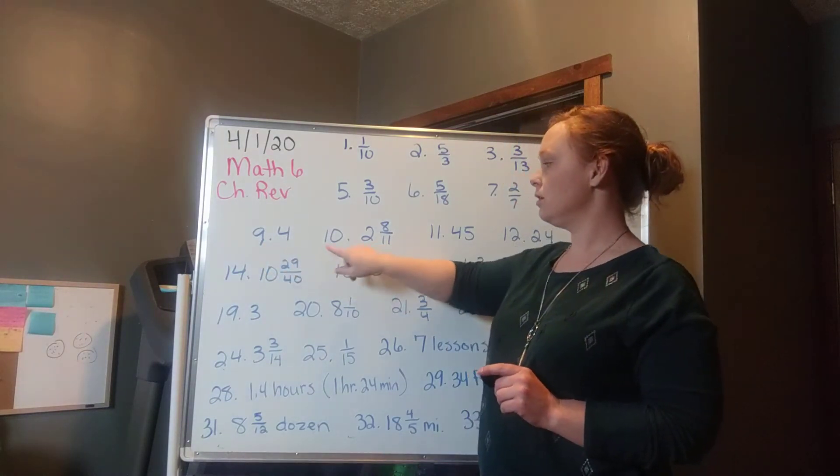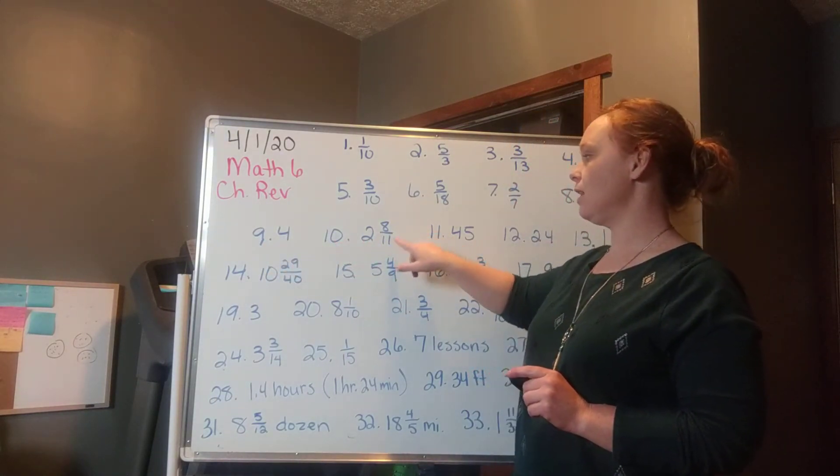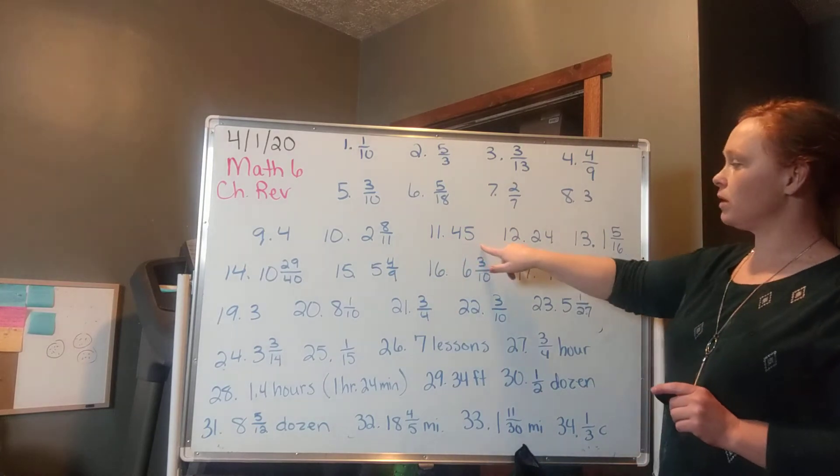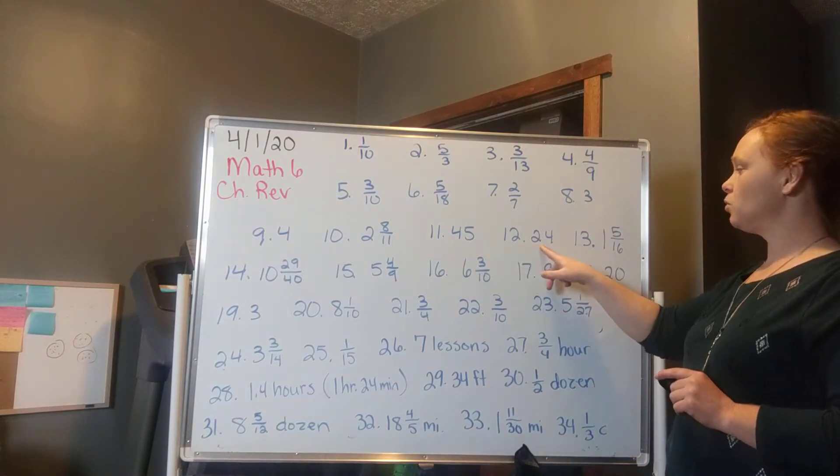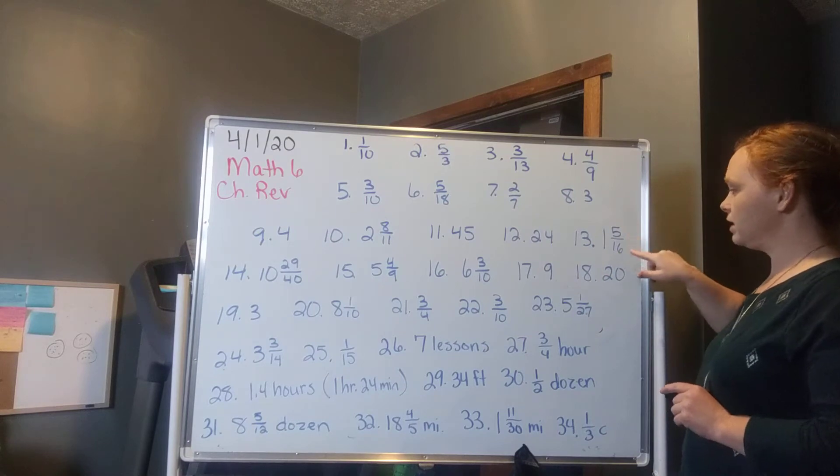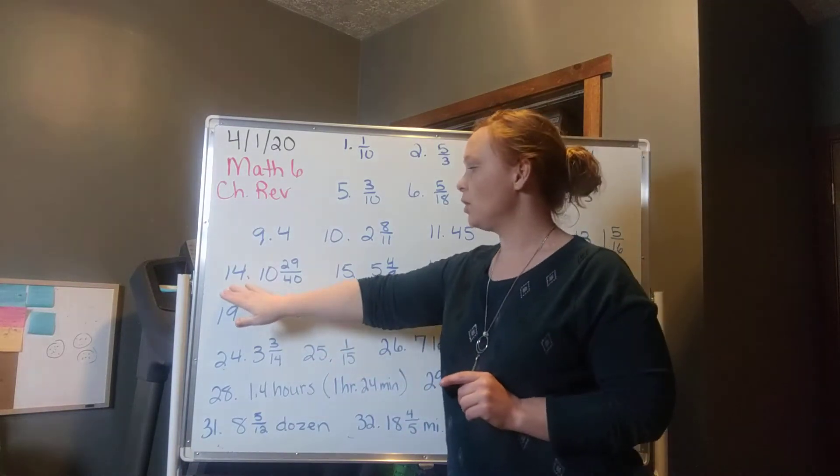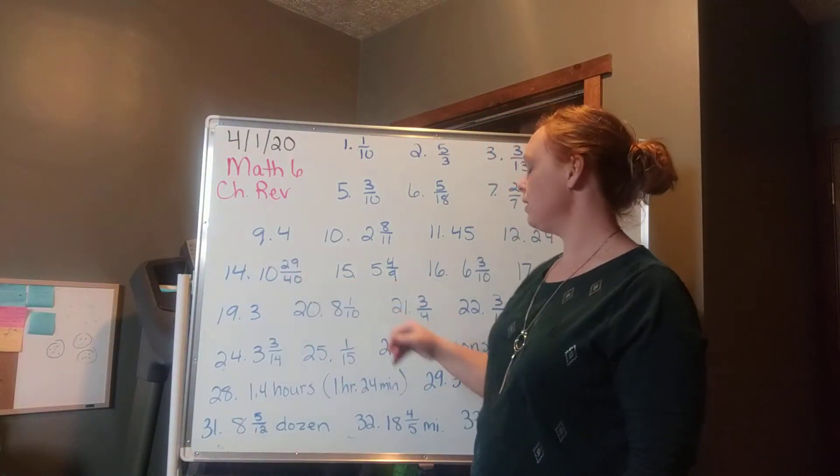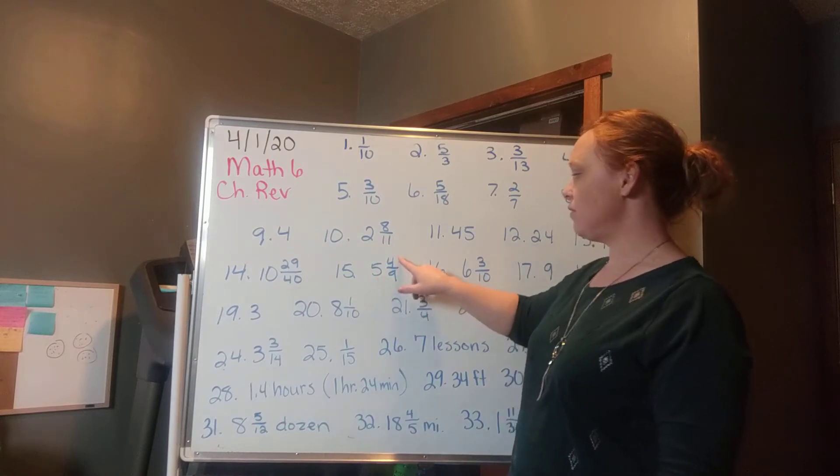Number 9 is 4. Number 10, 2 and 8 elevenths. Number 11 is 45. Number 12 is 24. Number 13 is 1 and 5 sixteenths. Number 14 is 10 and 29 fortieths. Number 15 is 5 and 4 ninths.